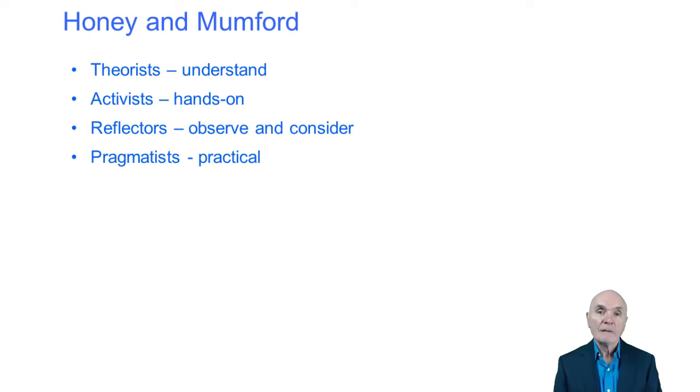Honey and Mumford identified four learning types, which is really relevant if you have a group of people and you're trying to teach, say, 40 people how to do something. It's important to realize that not everyone learns in the same way. So there are four types. First of all, you have the theorist. The theorist likes to know all the theories before they begin working.